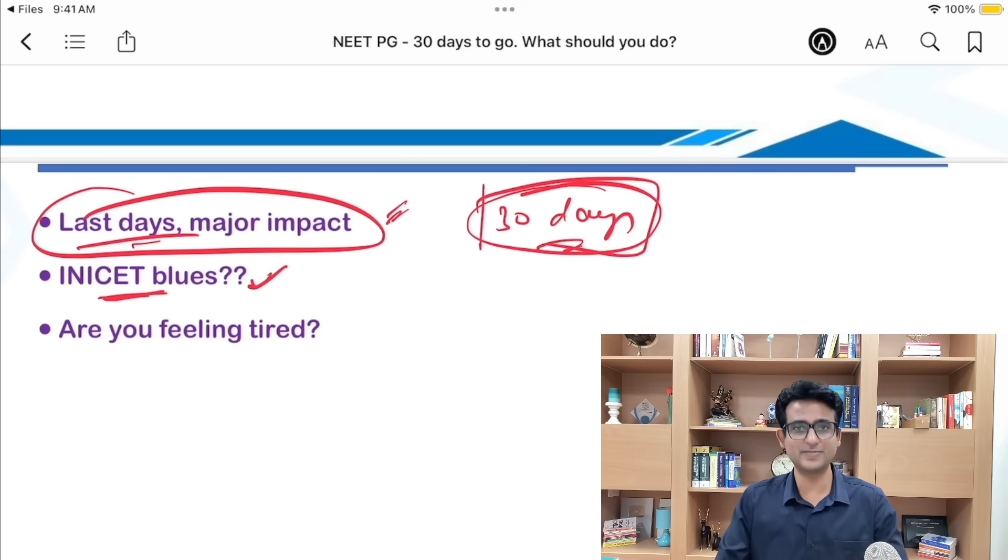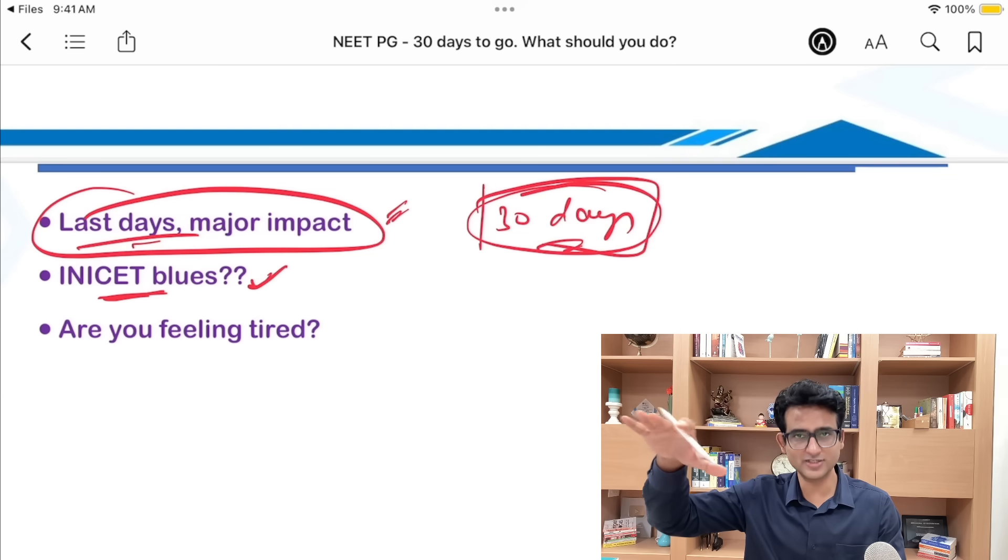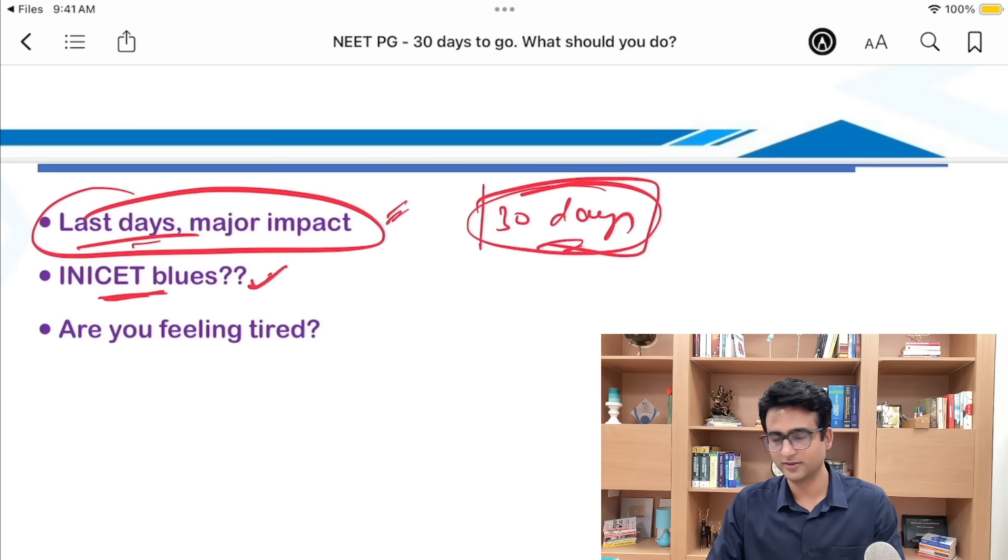Of course AIIMS Delhi is the biggest brand. Of course PGI Chandigarh is the biggest brand. But after those two, there are many colleges who are at the same level or just below those two colleges. And if you talk to the doctors, most of them will tell you that going to MAMC or going to Safdarjung or going to Grant's is probably better than going to one of the peripheral AIIMS.